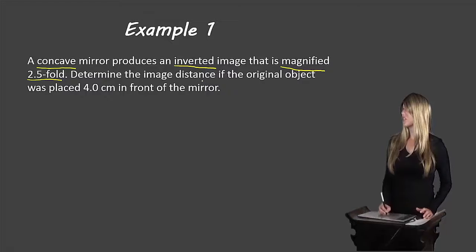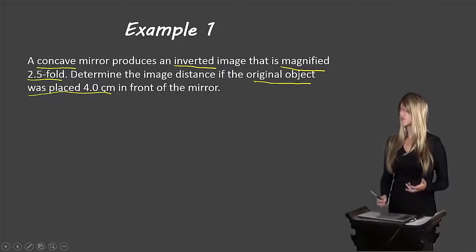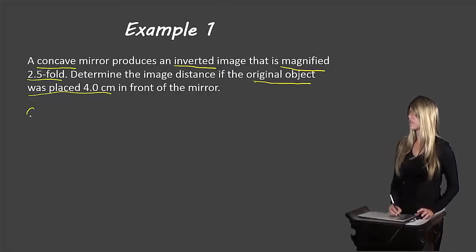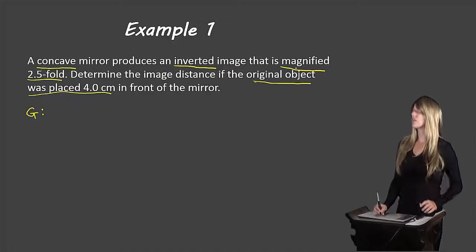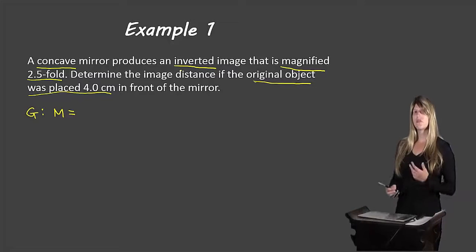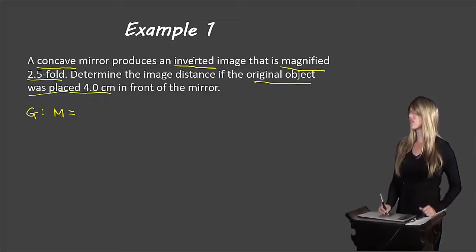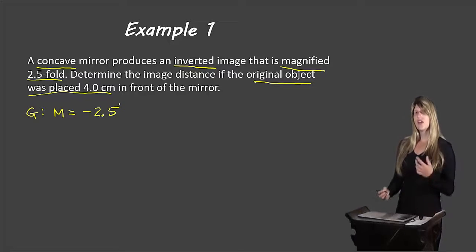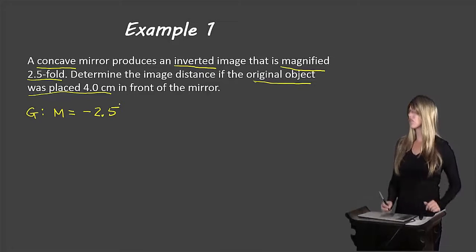So we have lots of information here. Let's start with our givens. We have a concave mirror that produces an inverted image that is magnified 2.5 fold. Our magnification is 2.5, but since it tells us it's an inverted image, our convention is to use a negative sign — so we'll write negative 2.5. Magnification doesn't have any units, so we can leave those off.